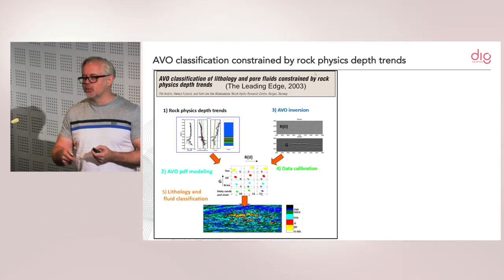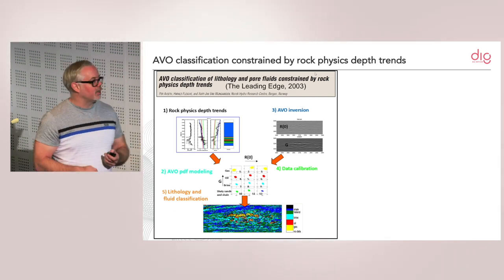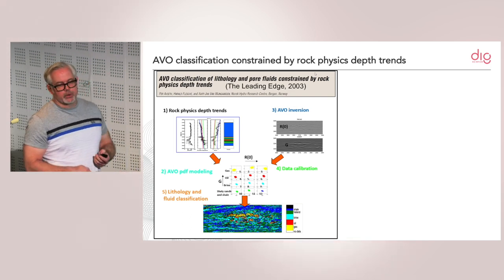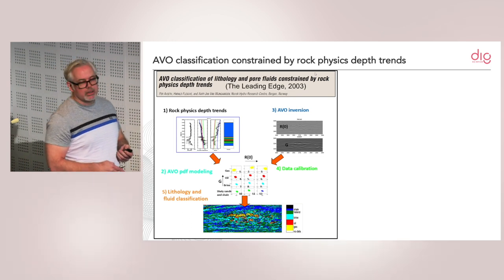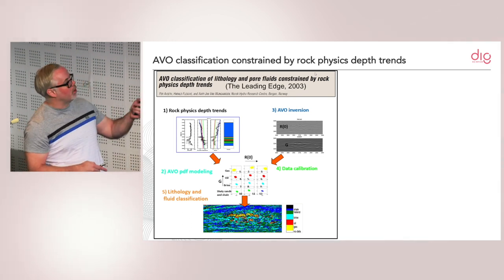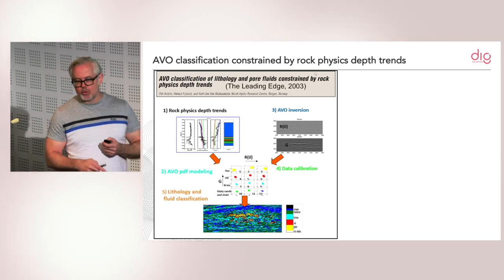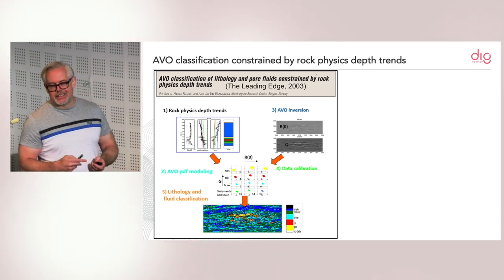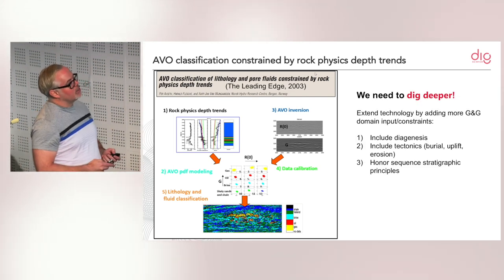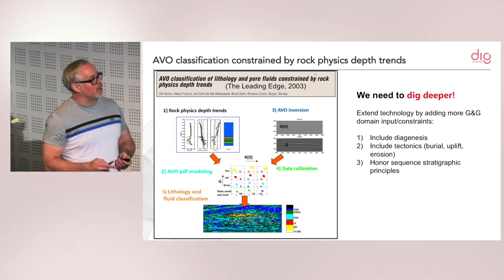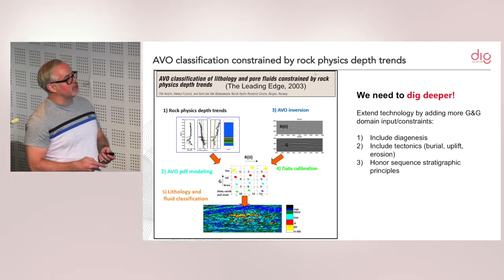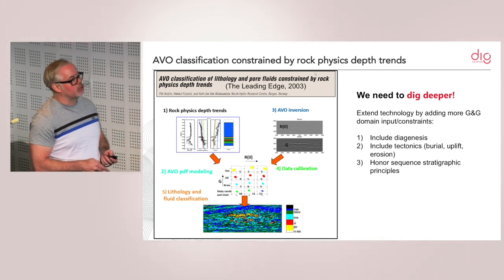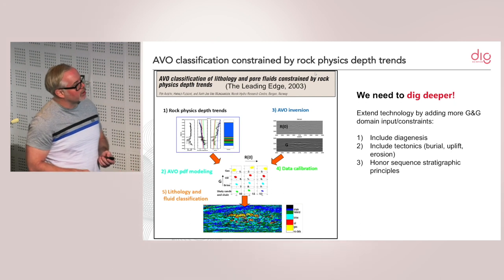This works well when you have unconsolidated sand, only mechanical compaction, no uplift, no diagenesis. But there's a lot more we can do — we need to extend the technology by adding more geologic domains. Diagenesis needs to be included, as does tectonics, especially in the Barents Sea, and sequence stratigraphic principles. So we need to dig deeper.